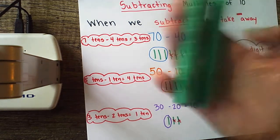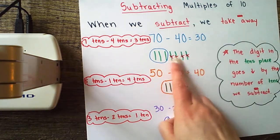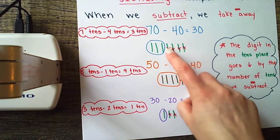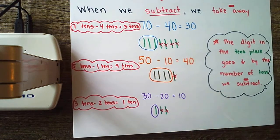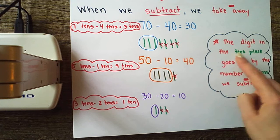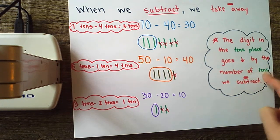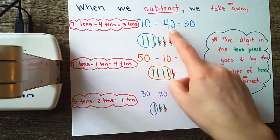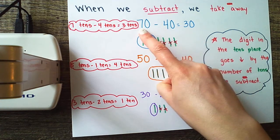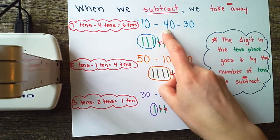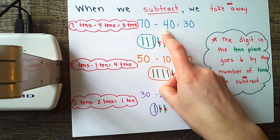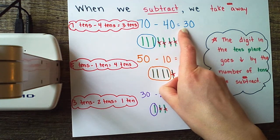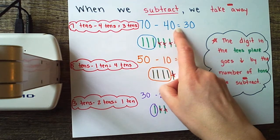Now here's a trick. I can do it with my objects or with pictures. Notice that when I subtracted 40, all I did was cross out one, two, three, four of my 10s. But I can also do this in my head. Here's the hint: the digit in the tens place goes down by the number of tens we subtract. When we started with 70 and took 40 away, we ended up with 30. My number in the tens place, seven, went down by the number of tens I took away, which was four, and I ended up with 30. Seven minus four is three, or seven tens minus four tens equals three tens.